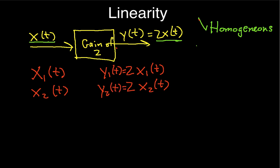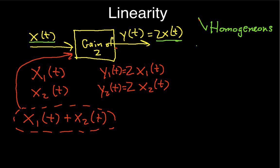Now the question we ask is, if we put x1 plus x2 into the system, what comes out? Well, conceptually, you think about this guy. It goes into our system, and out pops 2 times the input. So that would be 2 times x1 plus x2.